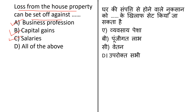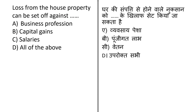Third option is salary — a form of periodic payment from an employer to an employee specified in an employment contract, as contrasted with piece wages. Last option is all of the above. The loss from house property is allowed to be set off against any other income arising during the same year. Therefore, if there is a loss under the head house property, it can be adjusted against income under any of the five heads: salary, house property, business or profession, capital gain, and other sources. The answer is option D — all of the above.